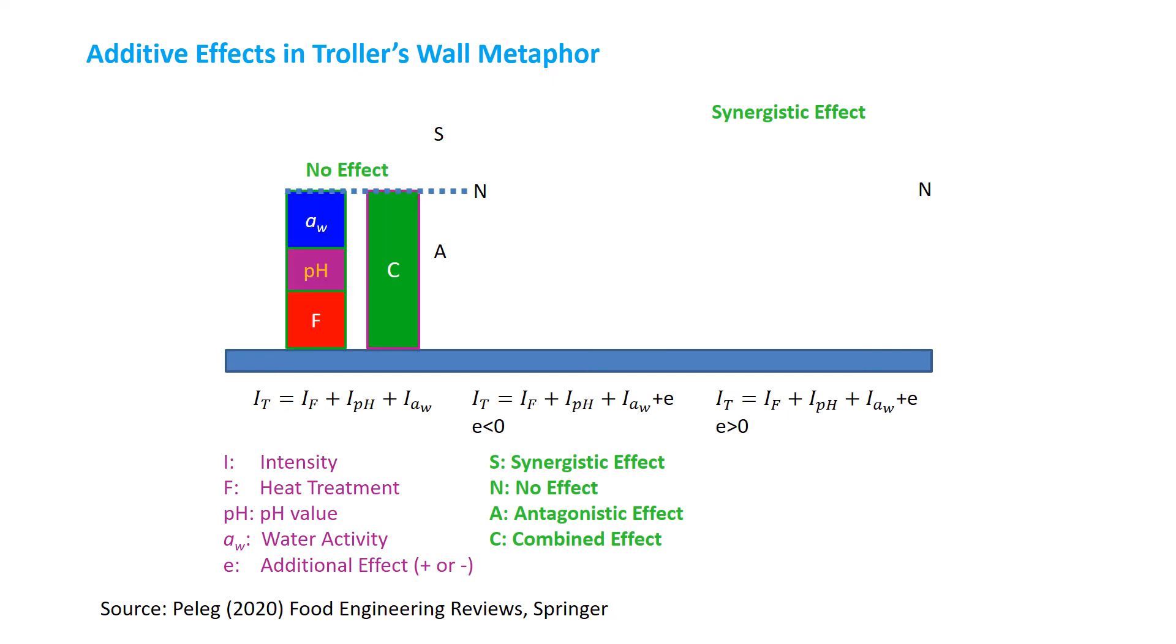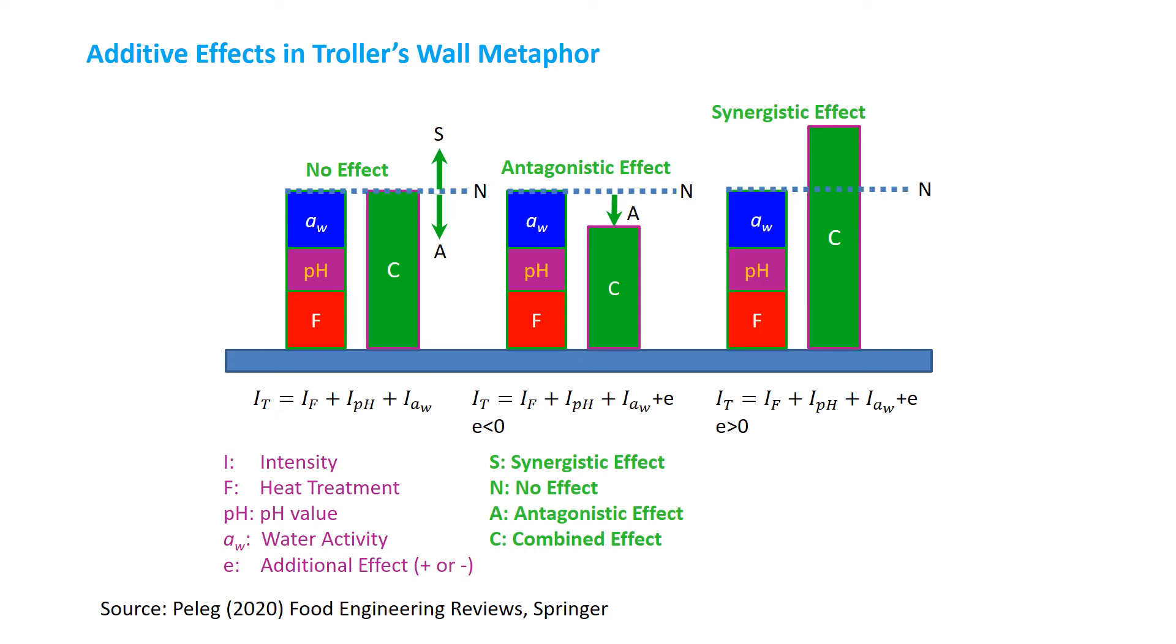We could visualize synergistic and antagonistic conditions in Peleg's metaphor. The first diagram shows the addition of water activity, pH, and F value hurdles in combination resulted in no effect, that is no benefit or loss. The second diagram shows the addition of these three hurdles resulted in loss, that is antagonistic. Finally, the third diagram shows that combination resulted in benefit, that is synergistic.